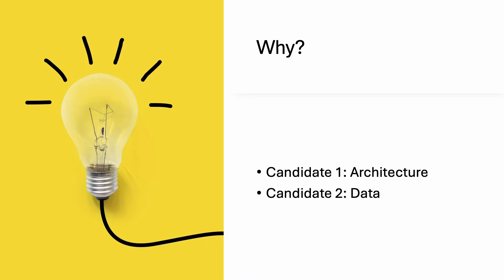There are many potential explanations for why multimodal large-language models fail at spatial reasoning. For example, a candidate is the architecture of the neural network or its training procedure. Another candidate is the lack of spatial information in the data. In our paper, we focus on the second one and hypothesize that the lack of spatial data is the reason these models fail at spatial reasoning.